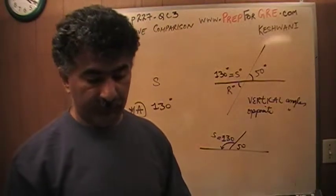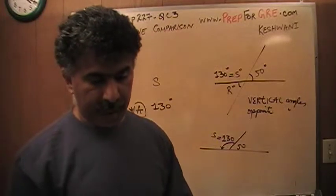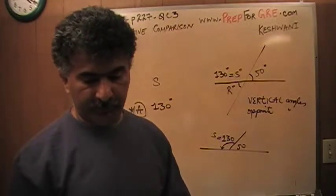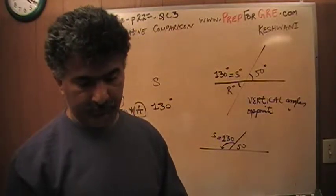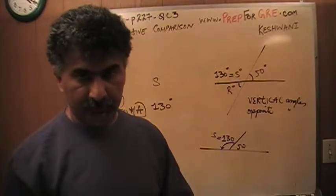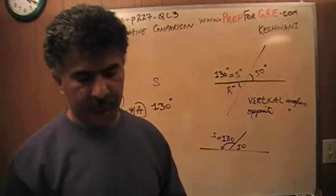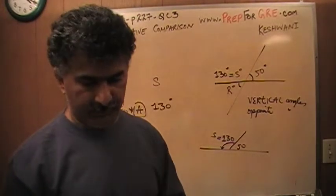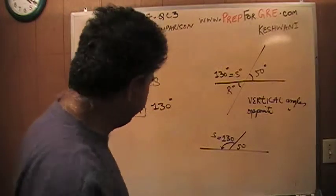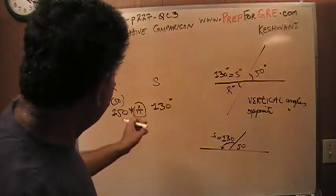To be more precise, what we have in column A and B are not degrees but rather 150 versus 130, because there is no degree symbol. It doesn't really matter. The answer is A.